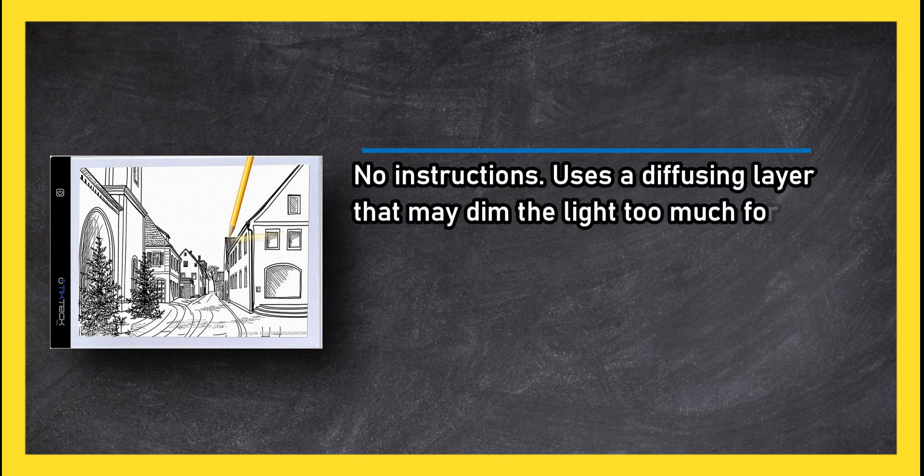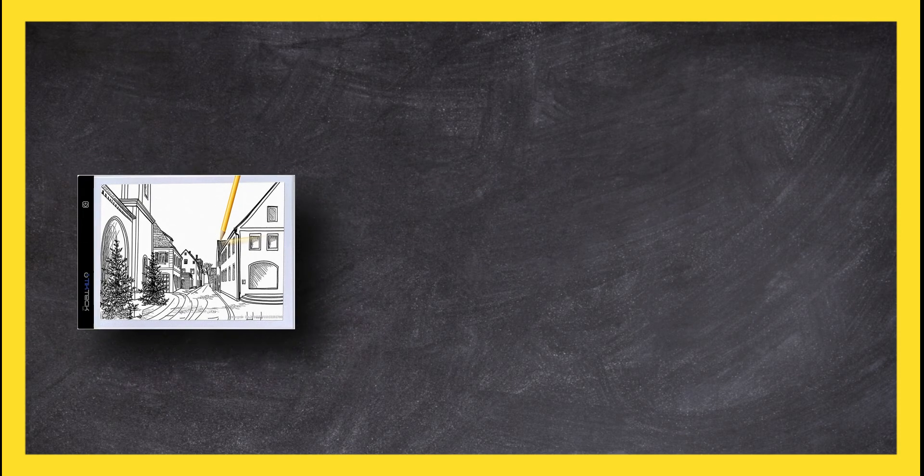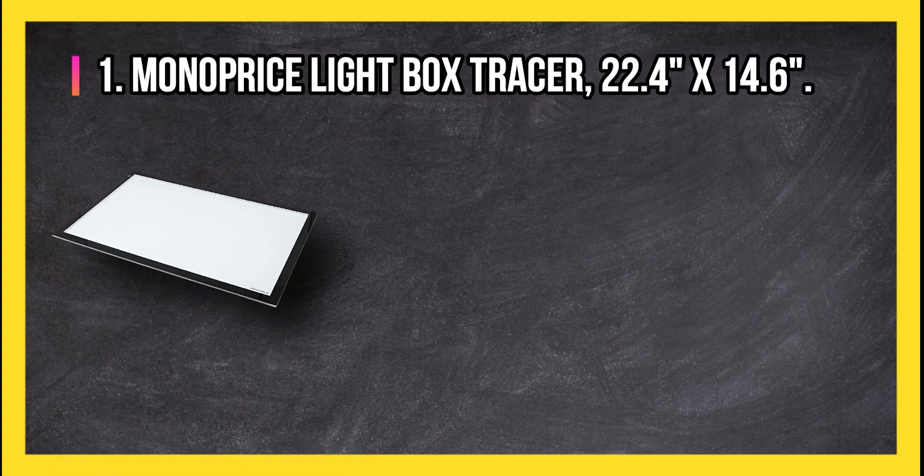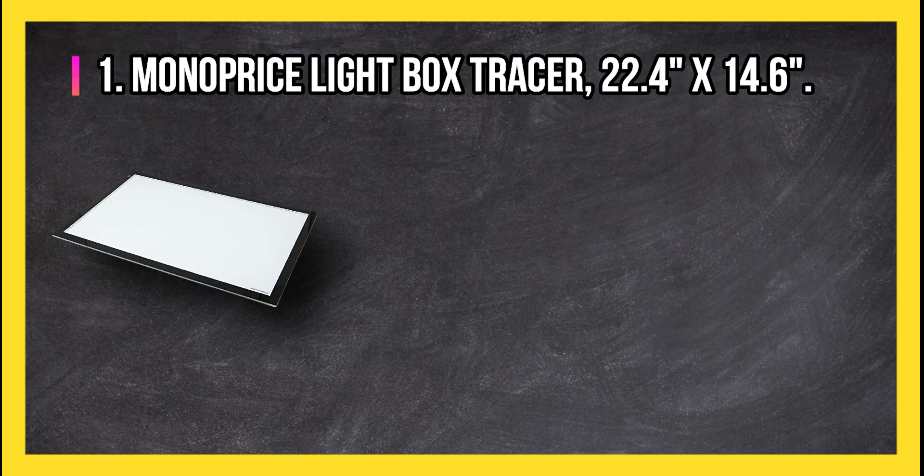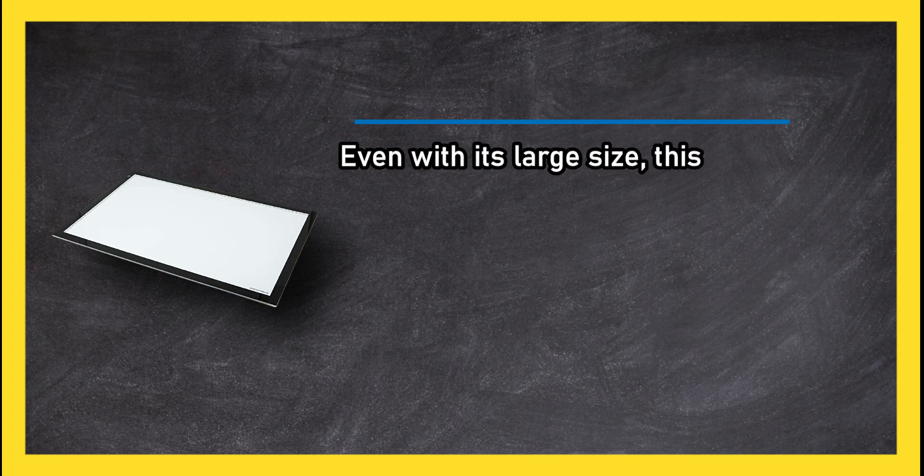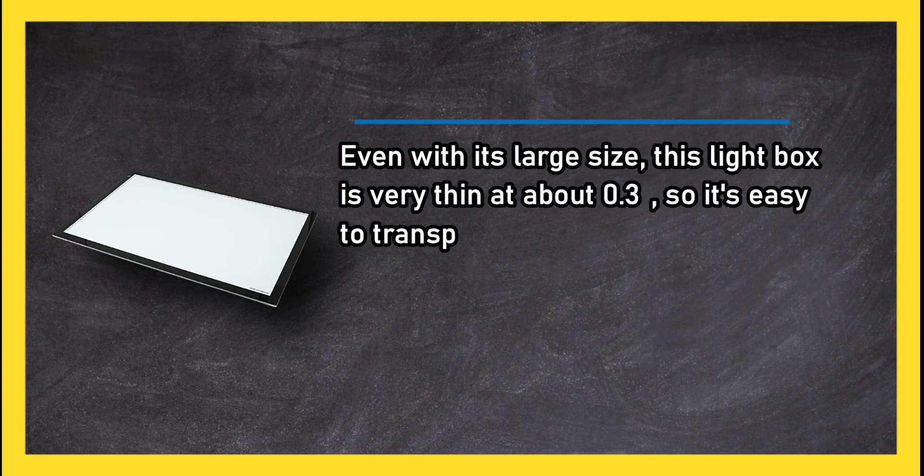At number one: Monoprice Light Box Tracer, 22.4 inches by 14.6 inches. Even with its large size, this light box is very thin at about 0.3 inches, so it's easy to transport wherever it's needed. Ships with the electrical adapter you need to power the device.